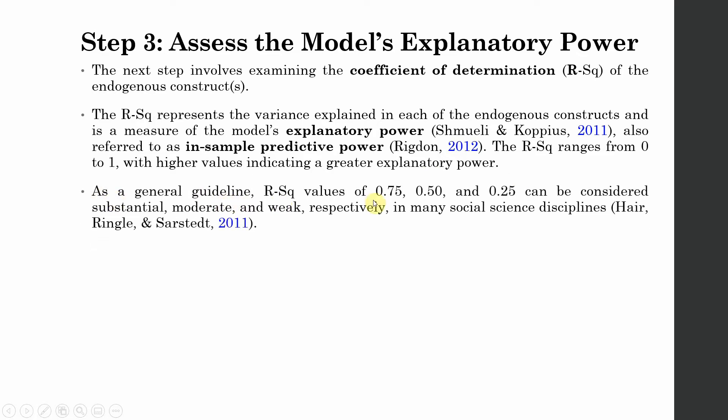As a general guideline, R-square values of 0.75, 0.50, or 0.25 can be considered as substantial, moderate, and weak respectively in many social science disciplines.